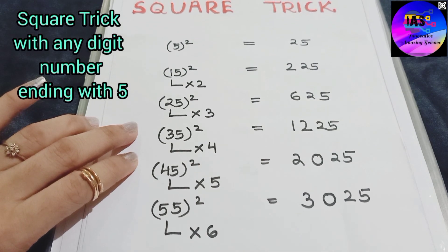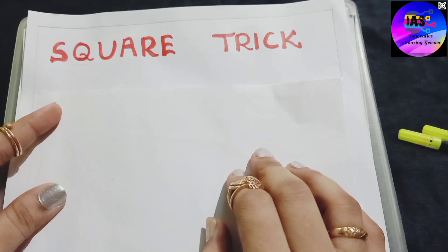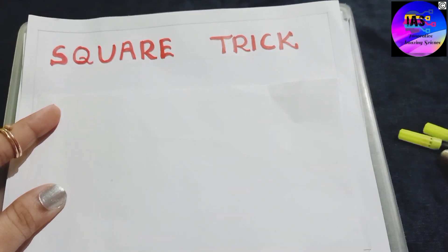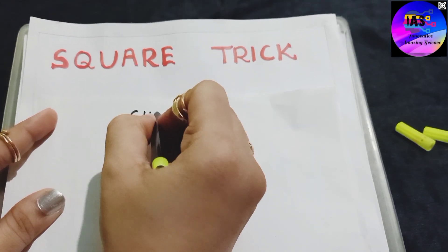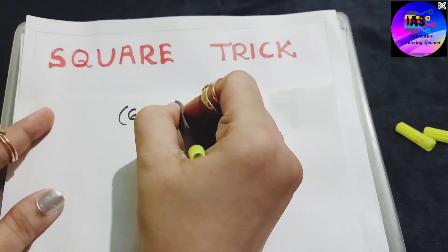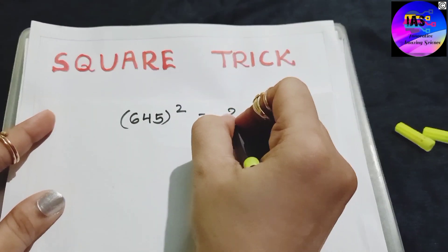Let's see. So let's take any number, any digit you can take. Let me take a number 645. It's a three digit number. We have to find the square.